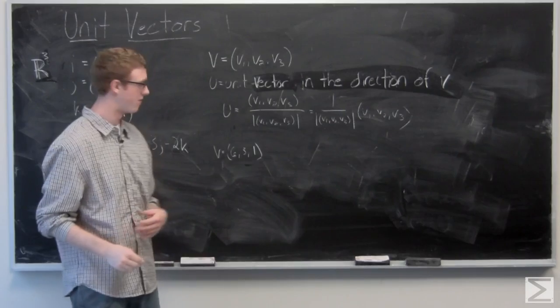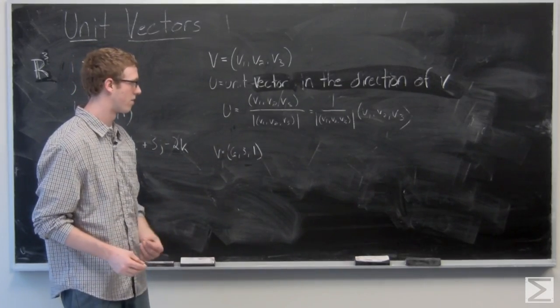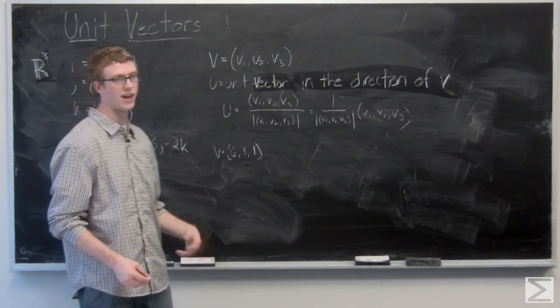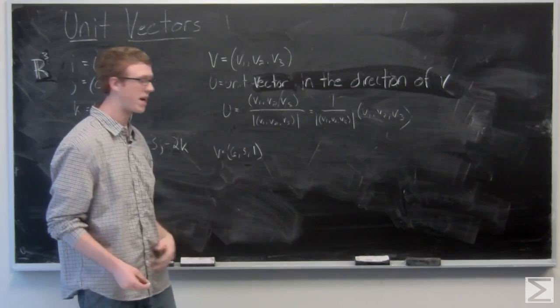So we have a vector v equals (6,3,1) in 3 space. So we're going to multiply (6,3,1) by the fraction 1 over the magnitude of (6,3,1). First we need to find the magnitude.